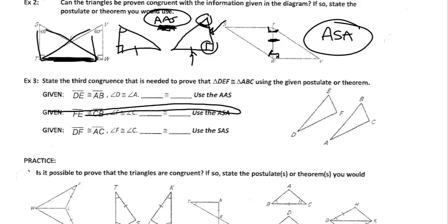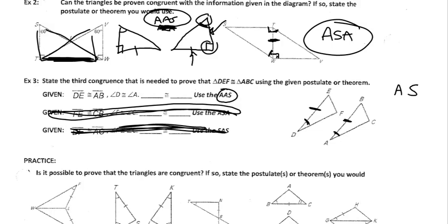I'm only going to do one of these. If DE is congruent to AB and we know angle D is congruent to angle A, what else would we need to use AAS? We currently have an A and an S, so we need one more A. Which angle needs to be congruent — is it E congruent to B, or F congruent to C? For AAS, the side must not be between the angles, so it's got to be F is congruent to C. If it were the other angle, the side would be between them — it would be ASA, not AAS.